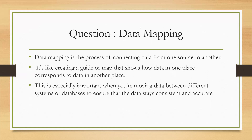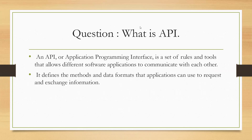Question 16: What is data mapping? Data mapping is a process of connecting data from one source to another — creating a guide or map that shows how data in one place corresponds to data in another. This is especially important when moving data between different systems or databases to ensure data stays consistent and accurate. Question 17: What is an API? An API (Application Programming Interface) is a set of rules and tools that allow different software applications to communicate with each other, defining the methods and data formats for requesting and exchanging information.